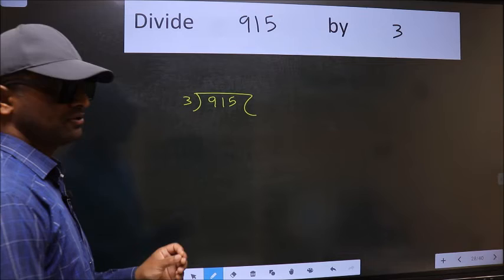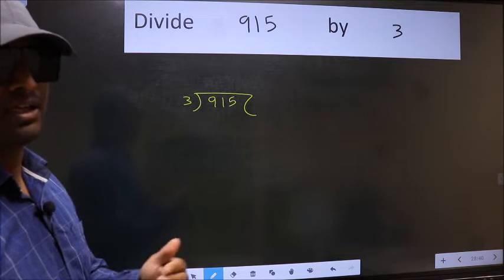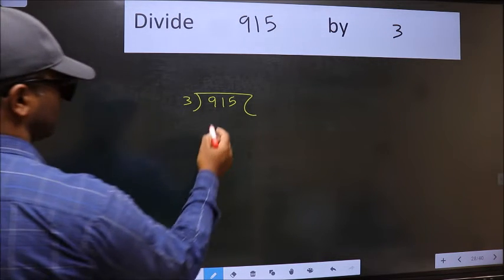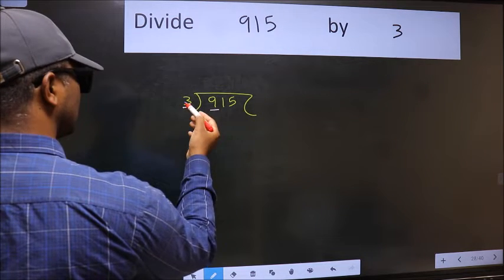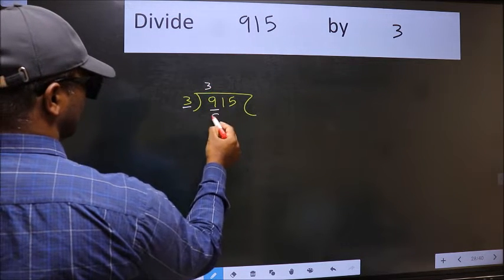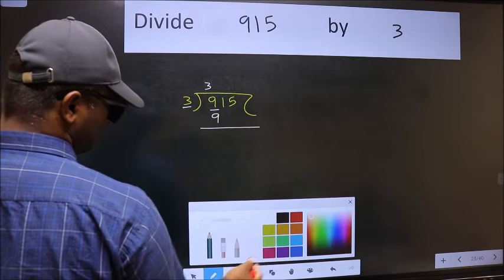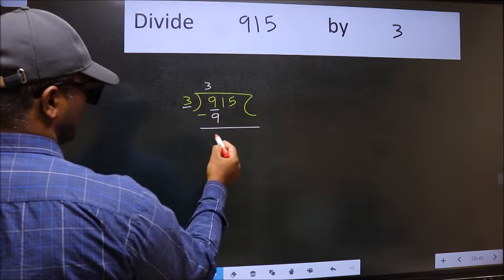This is your step 1. Next, here we have 9 and here 3. When do we get 9 in the 3 table? 3 threes are 9. Now we should subtract. We get 0.